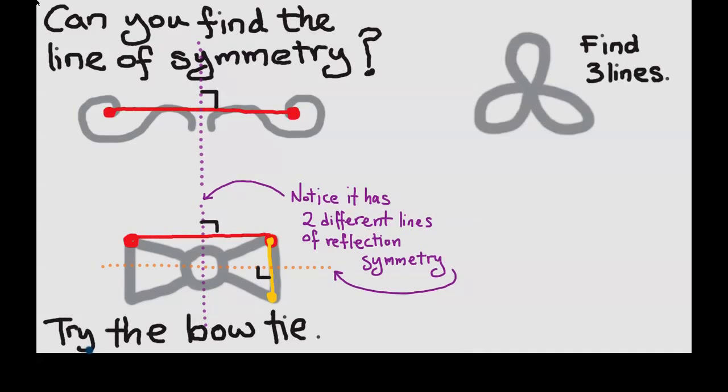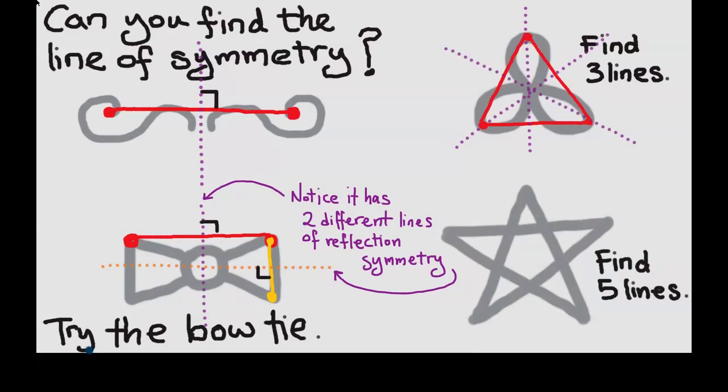Let's try the three-lobed flower. This one has three lines and you can see them. One, two, three there. And the five-pointed star has five lines. One, two, three, four, five.